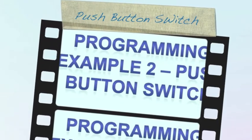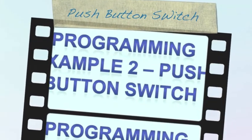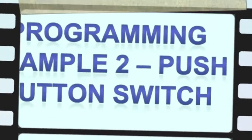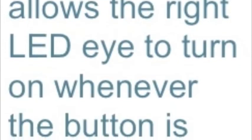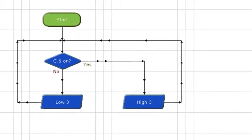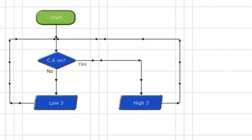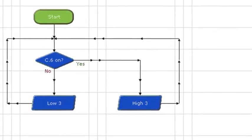Programming Example 2: Push Button Switch. The Push Button Switch allows the right LED to turn on whenever the button is pushed on the robot. This is a screenshot of the Push Button Switch program on the Logicator.